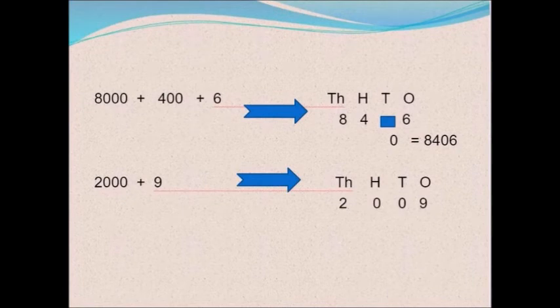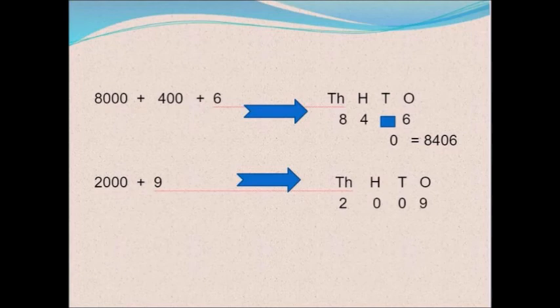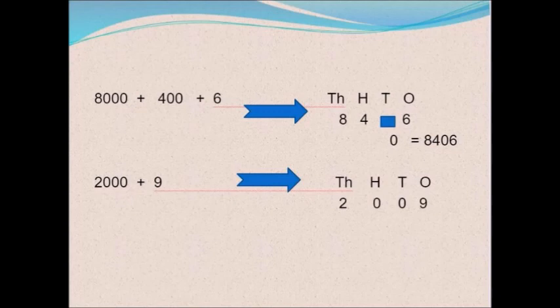In the same way, if the number is 8000 + 400 + 6, tens is not given, so I write 8 in thousands, 4 in hundreds, zero in tens, and 6 in ones — the number is 8406. Here is another: 2000 + 9. Write the place positions. Two thousand means 2 below thousands. Nine goes in the ones position. Write zero below hundreds and tens. The number is 2009.